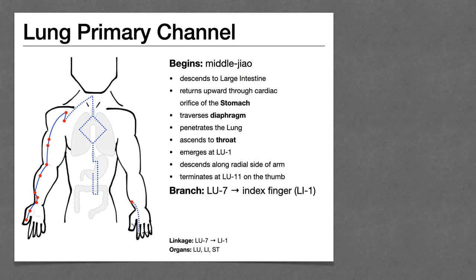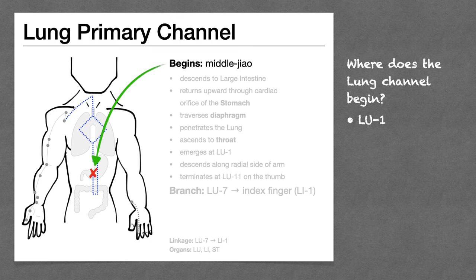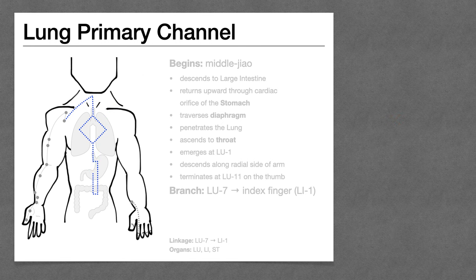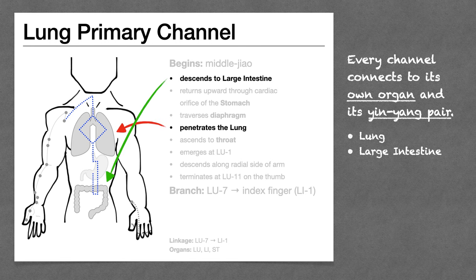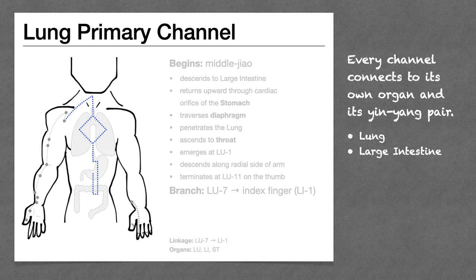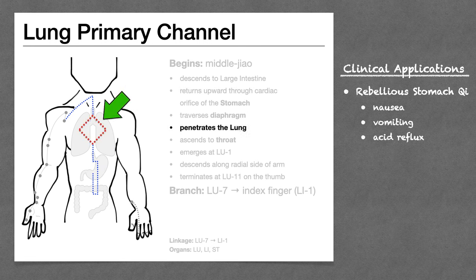Here's the lung primary channel, with a few key points to note. First, the lung channel starts with its internal pathway in the middle jiao — so where does the lung channel begin? Not Lung 1; it starts in the middle jiao. Second, every channel connects to its own organ and its yin-yang pair by way of its internal pathway, so here we see the channel connecting to the lung and the large intestine. We also want to note that the lung channel travels through the stomach organ, which lets us know that we can select points on the lung channel to treat certain stomach conditions such as nausea, vomiting, and acid reflux.